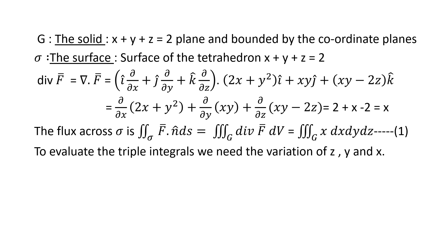Before applying the Divergence theorem, find divergence of F: del dot F = (i ∂/∂x + j ∂/∂y + k ∂/∂z) dot F, where F = (2x + y²)i + (xy)j + (xy − 2z)k. Taking the dot product: ∂/∂x of (2x + y²) gives 2; ∂/∂y of (xy) gives x; ∂/∂z of (xy − 2z) gives −2. So divergence of F = 2 + x − 2 = x.